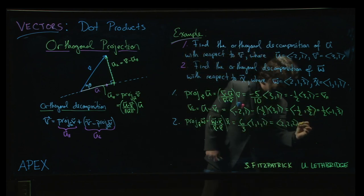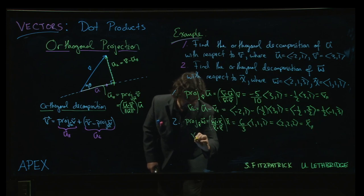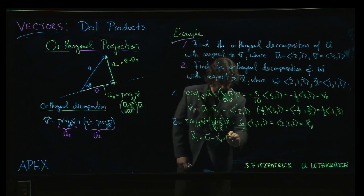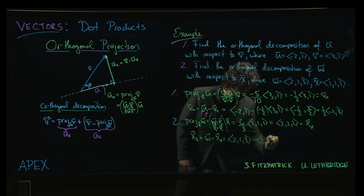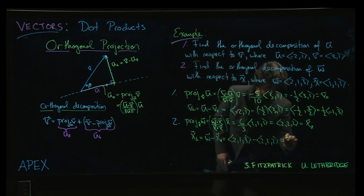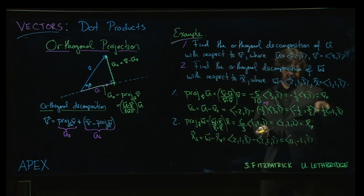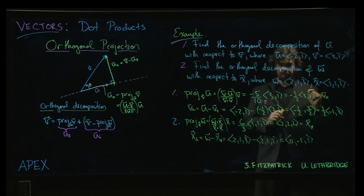And to get the part which is perpendicular to x, we're going to do w minus the parallel part. And so that is going to be (2, 1, 3) subtract (2, 2, 2). And the result is going to be (0, -1, 1). And indeed, if we take that vector and we dot it with x, we do get 0. So those vectors are orthogonal as promised.